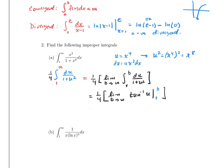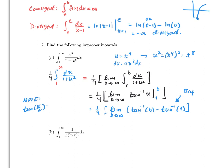Taking the limit gives (1/4) times [arctan(b) minus arctan(1)]. Note that arctan(1) equals π/4, and arctan(∞) equals π/2 because tan(π/2) equals infinity. Therefore the result is (1/4) times (π/2 minus π/4), which equals (1/4) times (π/4), giving π/16.